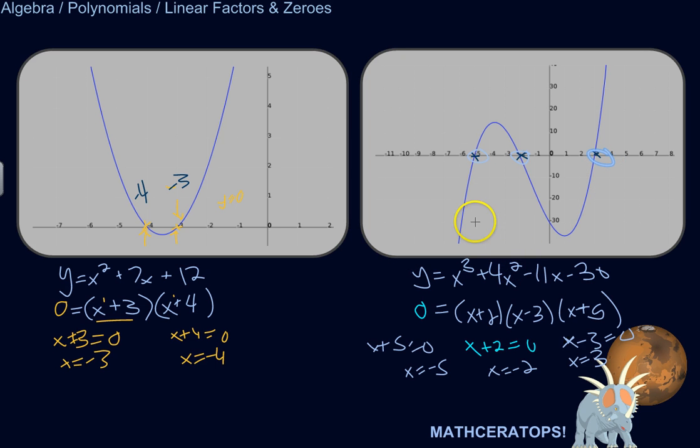So, finding the roots or also known as the zeros of a polynomial will involve factoring it so that it's just a product of linear factors and you can set each one to zero and figure out where those roots are.